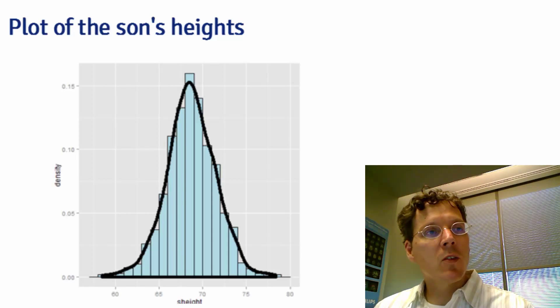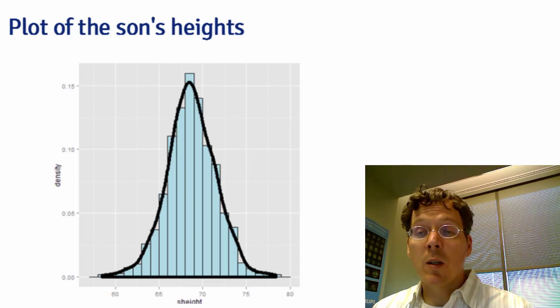If I were to plot a histogram of the son's height, I get this distribution right here, and I overlaid the histogram with a continuous density estimate. It's quite Gaussian looking. Now, this density estimate is an estimate of the population density. We don't have the population density because we didn't collect an infinite amount of data.